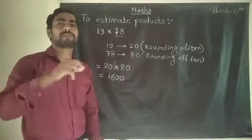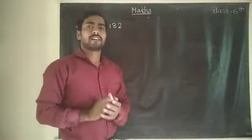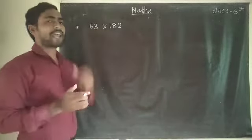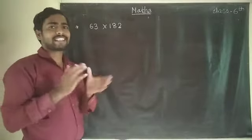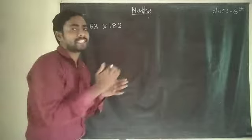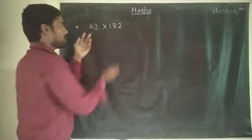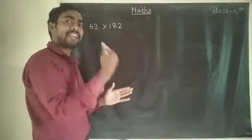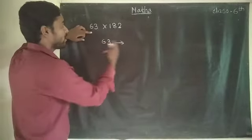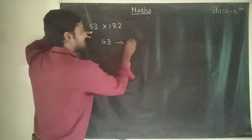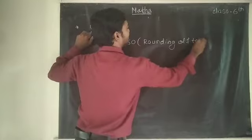The second example is 63 multiplied by 182. There is a mistake in that example in the book, so I will explain it here. We have to estimate this product — find the nearest answer, not the exact correct answer. First, 63 is a two-digit number with ones place and tens place, so we find the rounding of 10. The nearest 10 for 63 is 60. So we write 60.